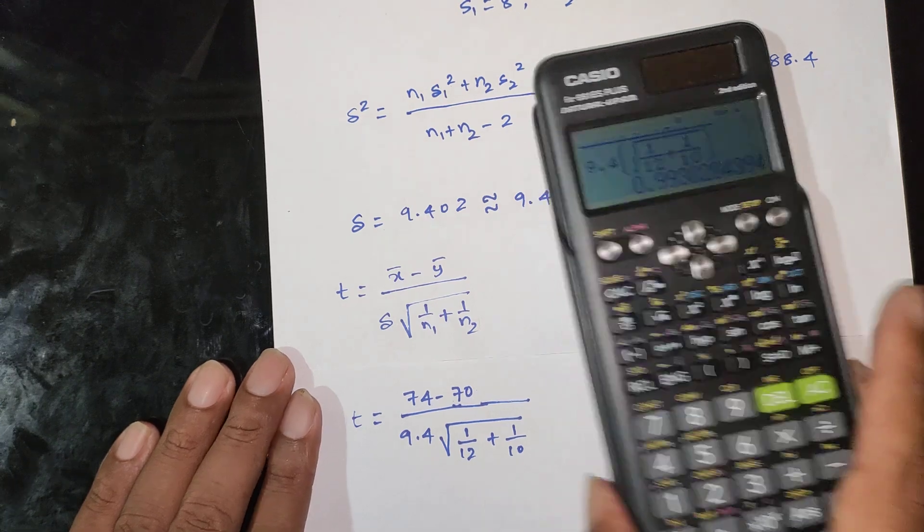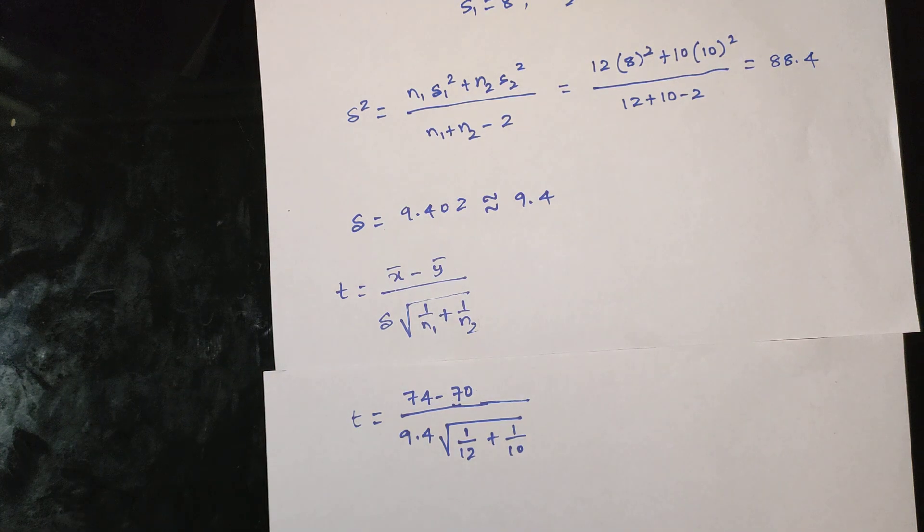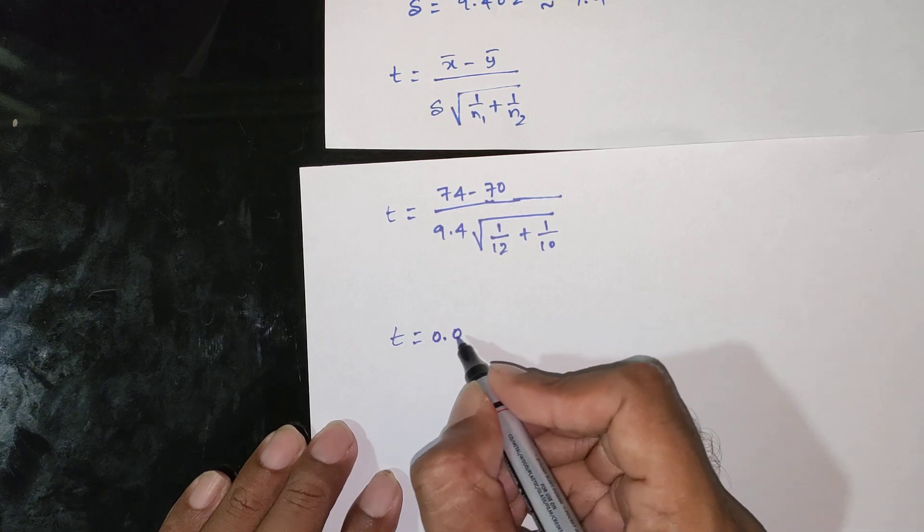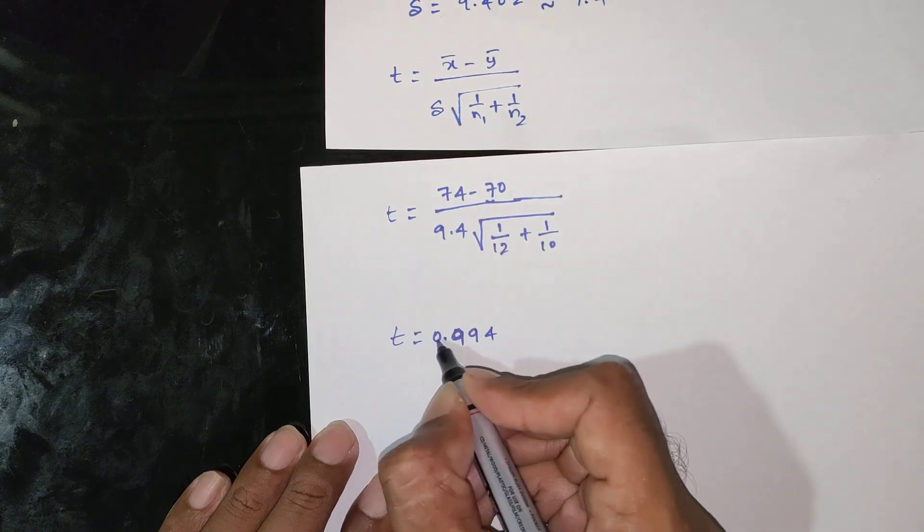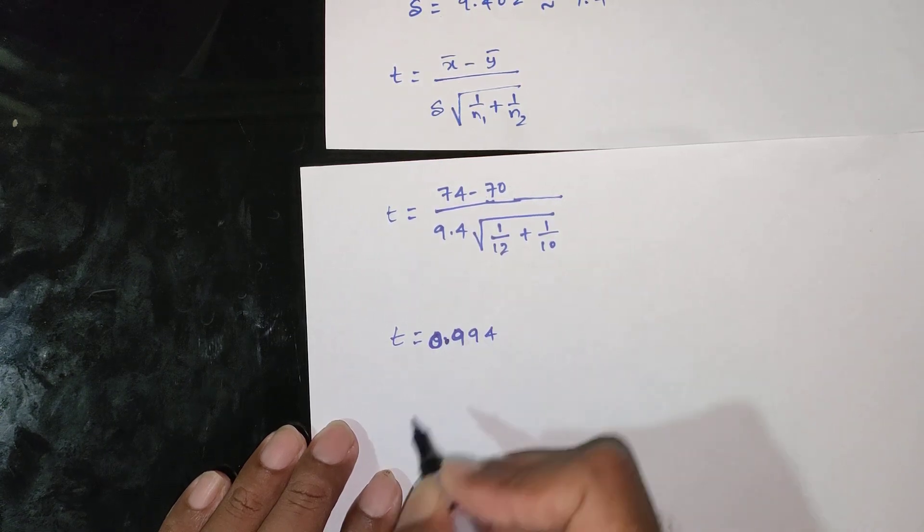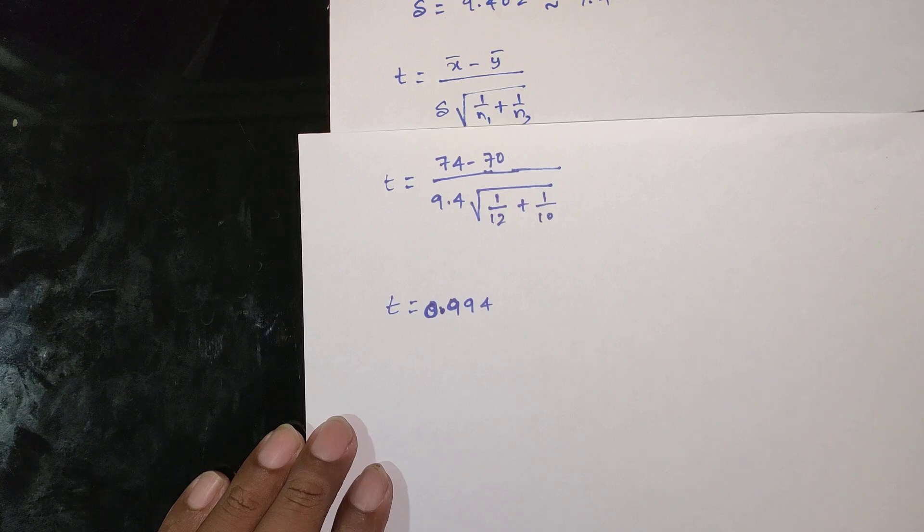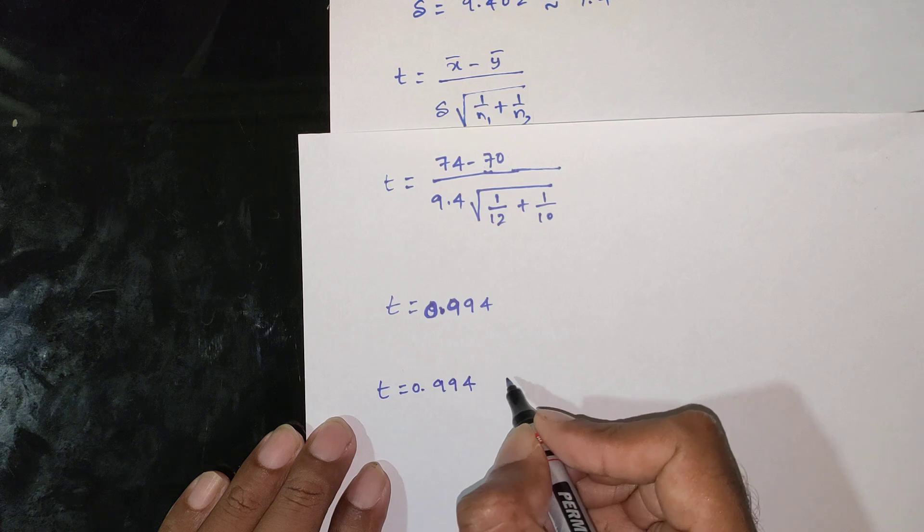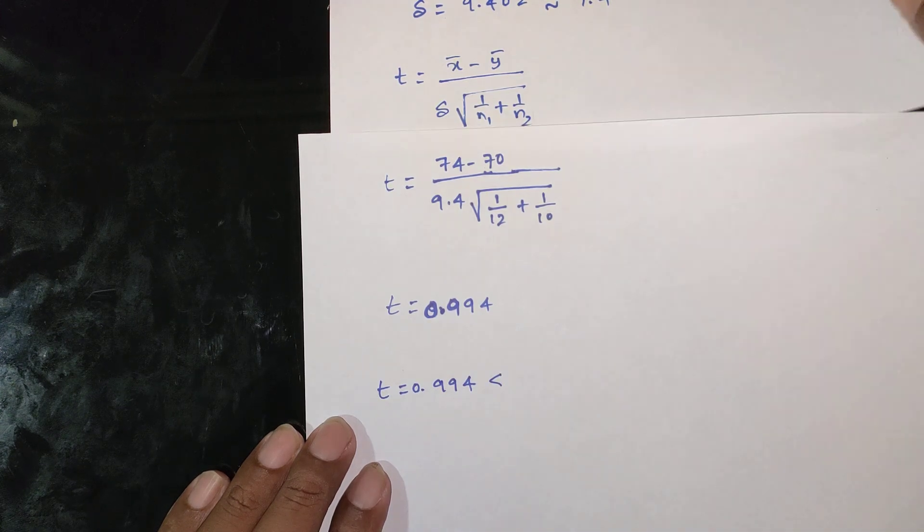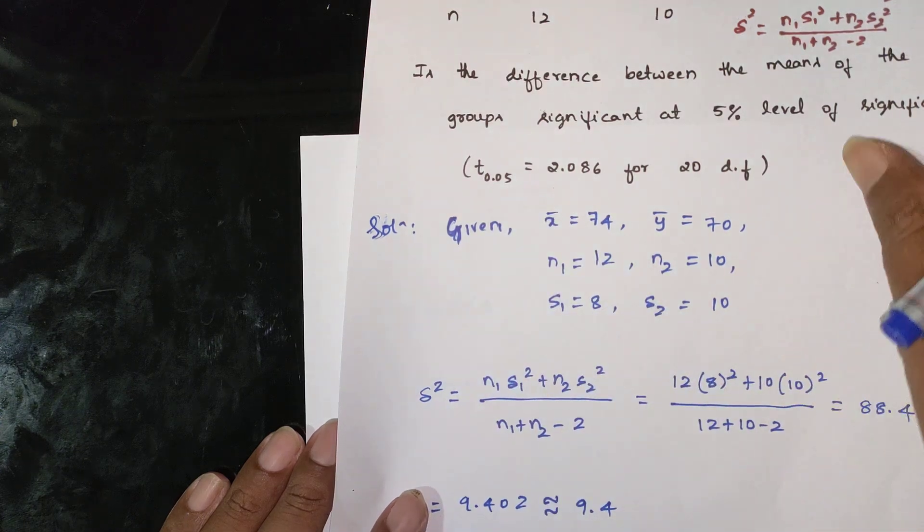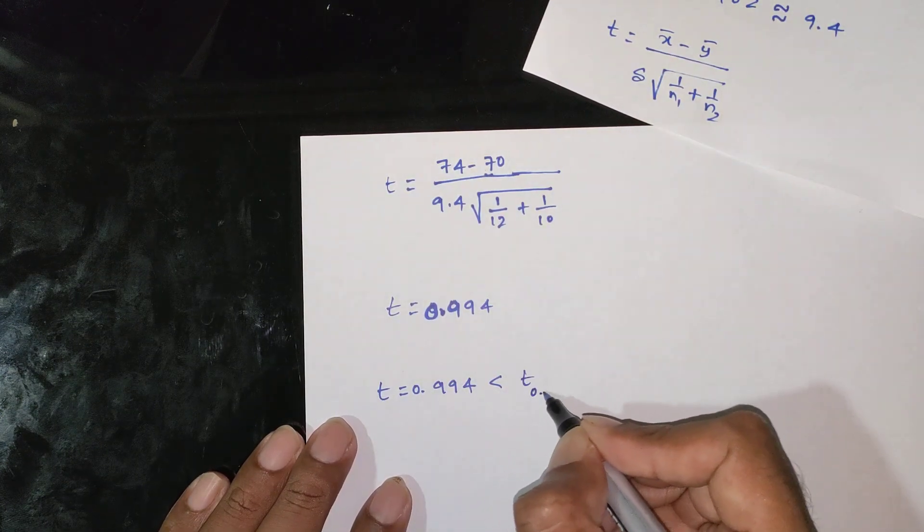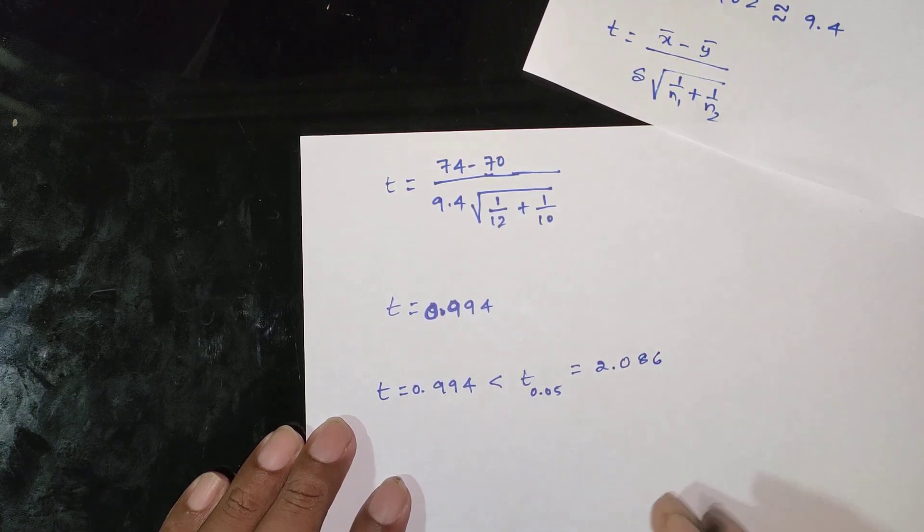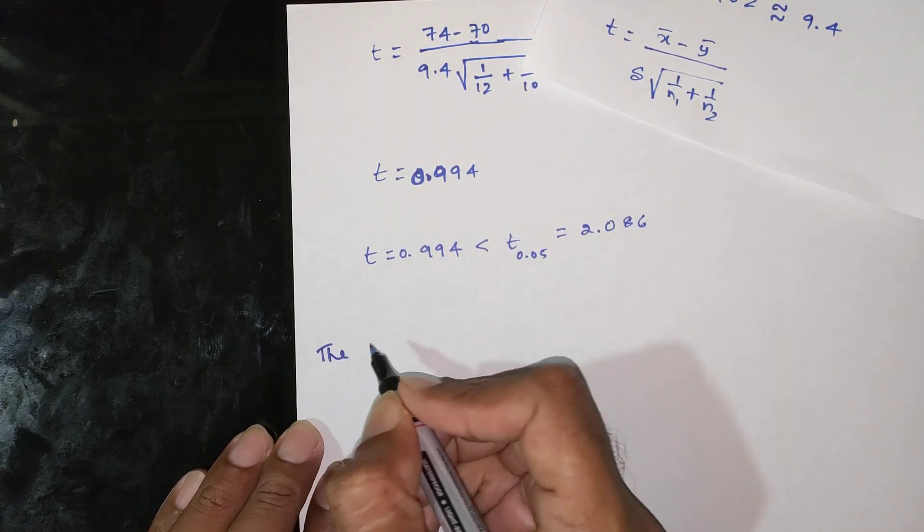t equals 0.994, and t 0.05 equals 2.086. Thus, calculated t is less than the given critical value, so we accept the hypothesis.